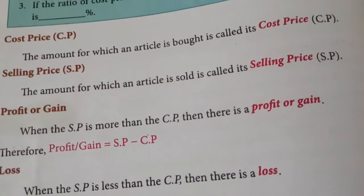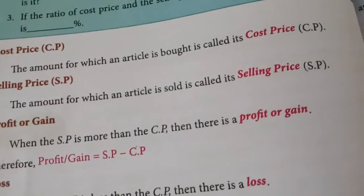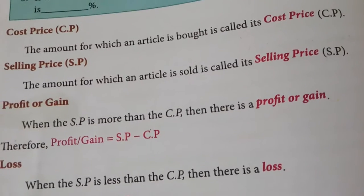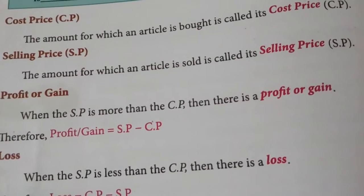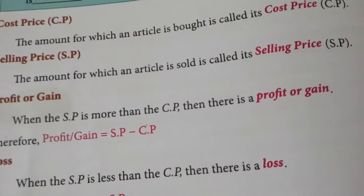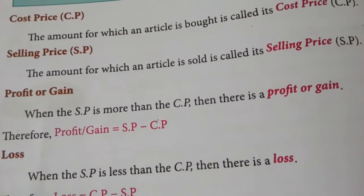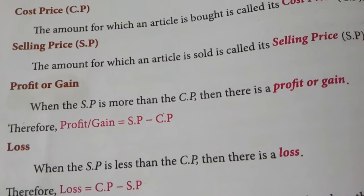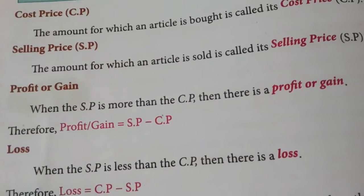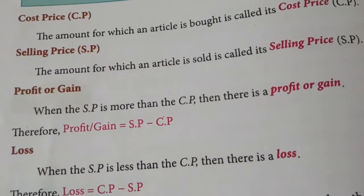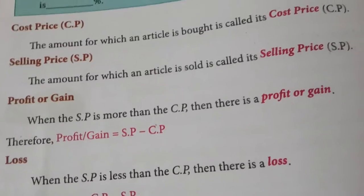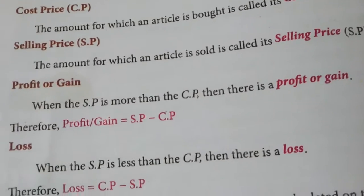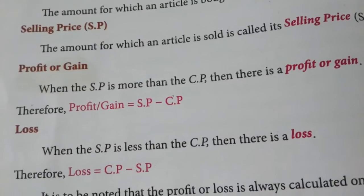So what I am doing is giving the bat I have to someone else — my friend or neighbor — for 200 rupees. That gives me a profit because I purchased the bat for 150 rupees but sold it for 200 rupees, adding 50 rupees more. So the profit for me is just 50 rupees. This shows that when your SP is more than your CP, it is a profit.